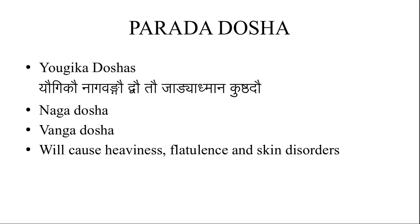Then comes yaugika doshas: yaugigao naga vanggao bow; tau jadya atmana kushtado. That is naga dosha and vanga dosha. Naga means lead and Vanga means tin. Merchants add lead and tin to mercury in order to increase the weight, thereby earning more profit — these are adulterants. Naga dosha and vanga dosha are toxic to our body when parada is used therapeutically, causing heaviness.